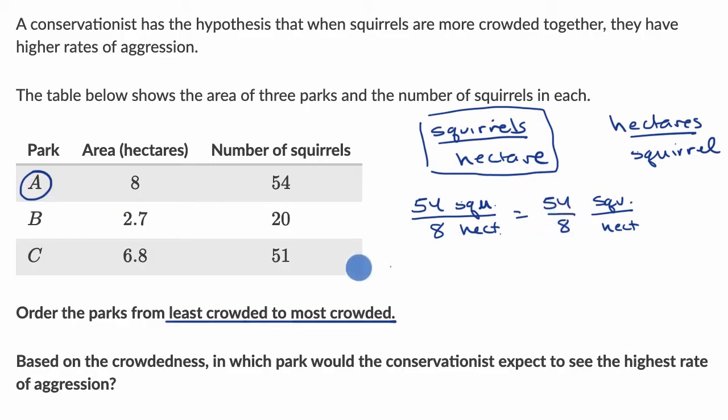Eight goes into 54. It goes six times. Six times eight is 48. Subtract, I get a remainder of six. Put a decimal here. Bring down that zero. Eight goes into 60 seven times. Seven times eight is 56.